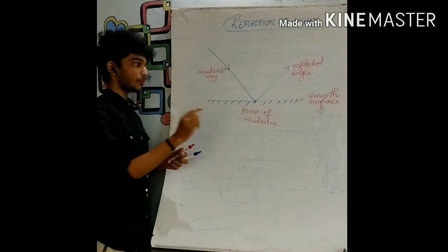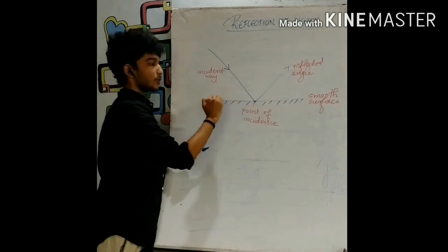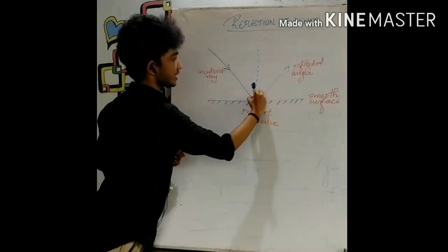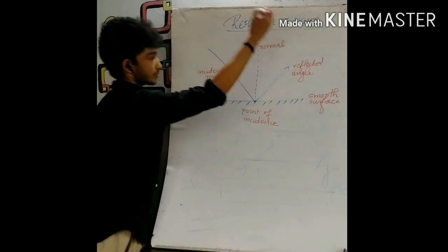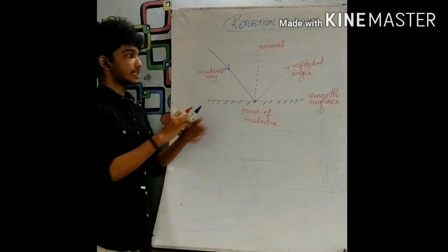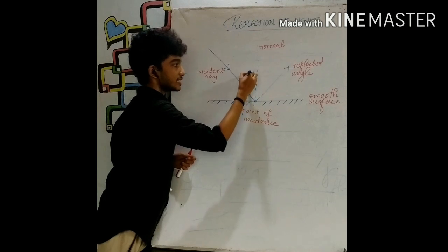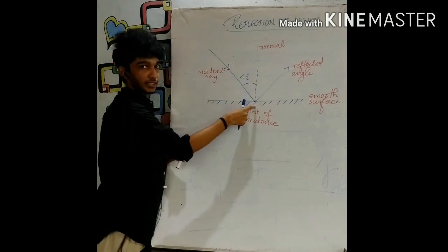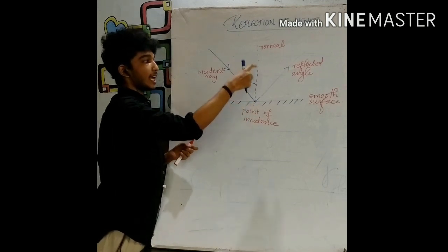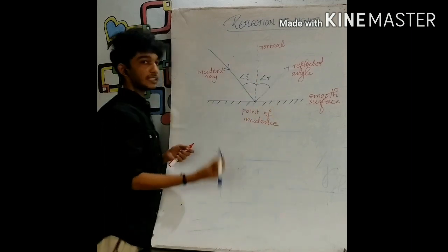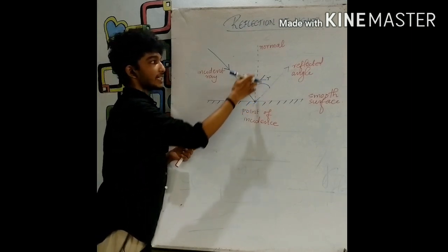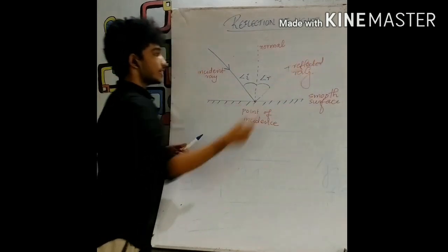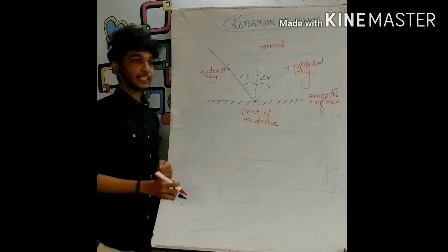Now let us draw a normal — a perpendicular to the smooth surface passing through the point of incidence. This is known as the normal. We now have two angles. The angle between the incident ray and the normal to the point of incidence is known as the angle of incidence, i. The angle between the normal and the reflected ray is known as the angle of reflection, r.